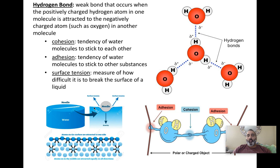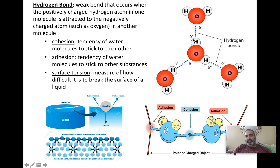Hydrogen bonding is a special bond that water can make. It's a weak bond — not very strong. You break hydrogen bonds when you jump into your swimming pool, when you take a shower, when you touch water. These bonds hold water molecules to each other. The negative charge side of the oxygen sticks to the positive side of a neighboring hydrogen in another water molecule, forming what's called a hydrogen bond.